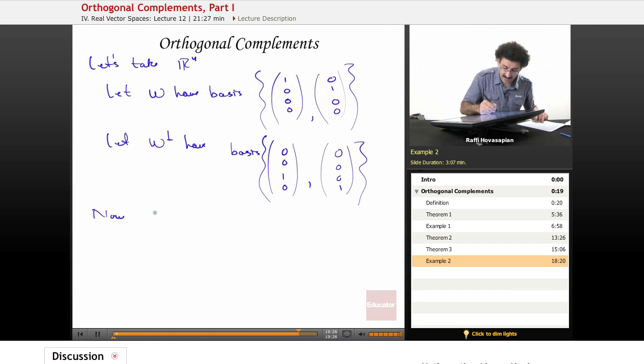if I take W direct sum W perp, well, that's equal to R4, right?